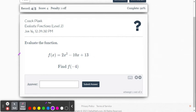This next example, we have f of x equals 2x squared minus 10x plus 13. It says find f of negative 4. So the input value is x equals negative 4.